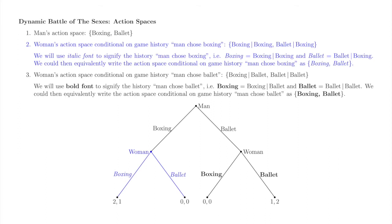We indicate this history by writing her action followed by a vertical line followed by his action. We read the vertical line as 'conditional on,' so 'ballet vertical line boxing' indicates the woman selects action ballet conditional on the man selecting boxing. If the vertical line notation gets cumbersome, we can use font or some such to indicate that the woman is selecting an action from the action space that follows the man's selection of boxing. In this example, we italicize the woman's action to indicate she is selecting from the action space conditional on the man going boxing.